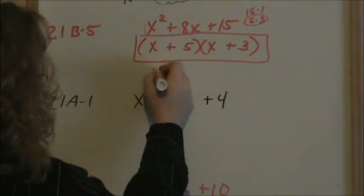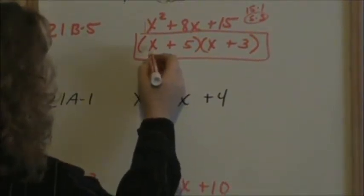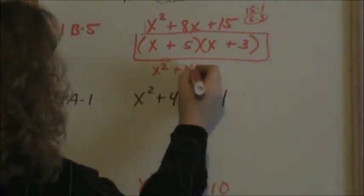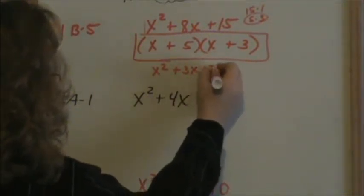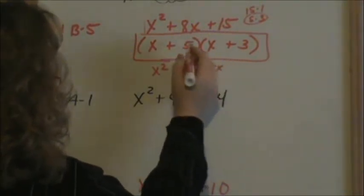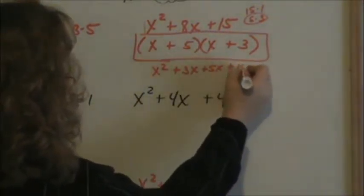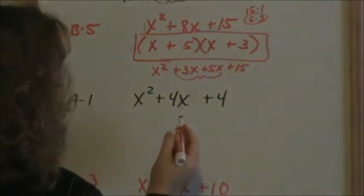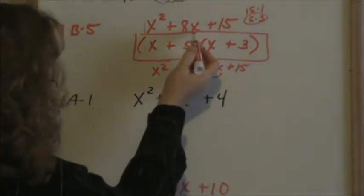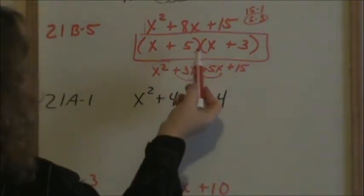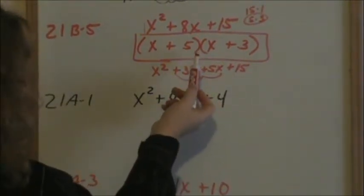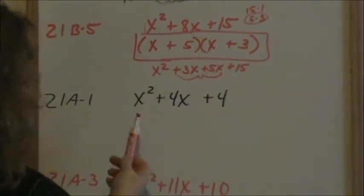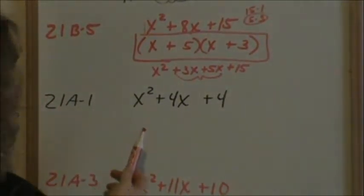x times x is x squared. Outside terms give positive 3x. Inside terms gives you a 5x. The last terms gives you a plus 15. Combining these middle terms does give you the 8x that's in the middle. For a refresher on how to FOIL, see the video on multiplying binomials.